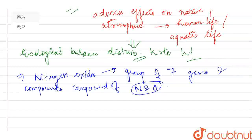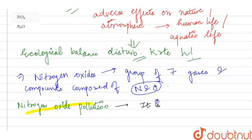Nitrogen oxide pollution - it is emitted from vehicle exhaust, burning of coal and diesel.